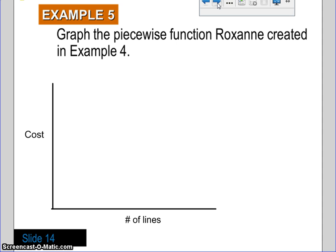Alright, last question here. It says, graph the piecewise function that Roxanne created, for example four. So, that was the one where it was 41.55 when it was basically six or less lines. It was 41.55 plus 5.50 when it was over six lines.